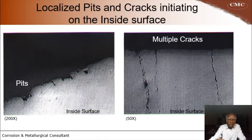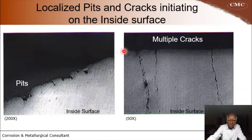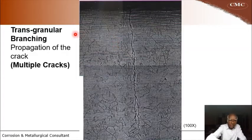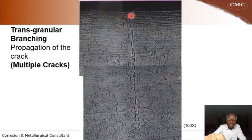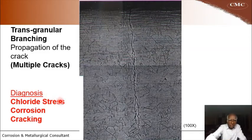These are the typical metallographic structures in the as-polished condition. It shows localized pits on the alcohol surface — this is the inside surface where alcohol flows — along with localized pitting corrosion. You can also see multiple cracks initiating on the internal alcohol surface at several places. The previous slide shows initiation; this slide shows propagation. The propagation shows transcranular branching cracks initiating at two or three places — this is called multiple cracks. Multiple transcranular branching cracks indicate stress corrosion cracking. The diagnosis is therefore chloride stress corrosion cracking.